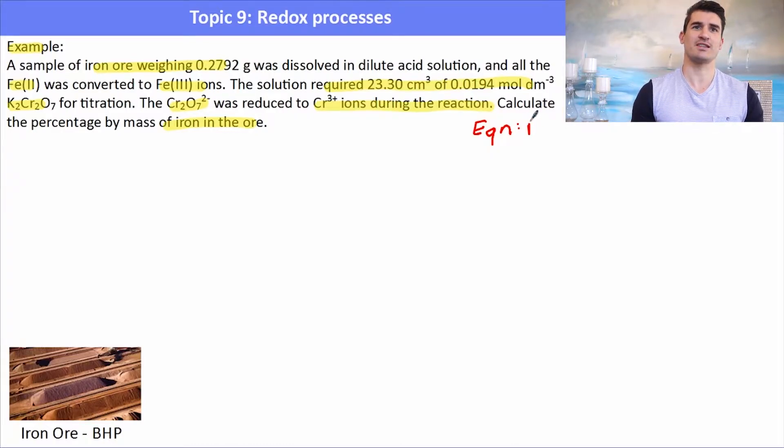The question says calculate the percentage of mass of iron in the sample. Now the problem here is they haven't given us an equation, so what we need to do is balance the chemical equation according to the KOHES method. This is where you need to get good at balancing your redox reactions and trying to do it in one very quick step.